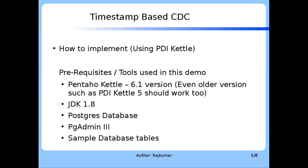How to implement this technique using the Pentaho Kettle tool? Before going ahead with the implementation, let us go through the tools used for this demo. Prerequisites: Pentaho Kettle 6.1 stable community edition, the latest version at the time of this session; JDK version 1.8; a Postgres database — one for the source and another for the target; and pg-admin3 client tool for accessing the Postgres database.